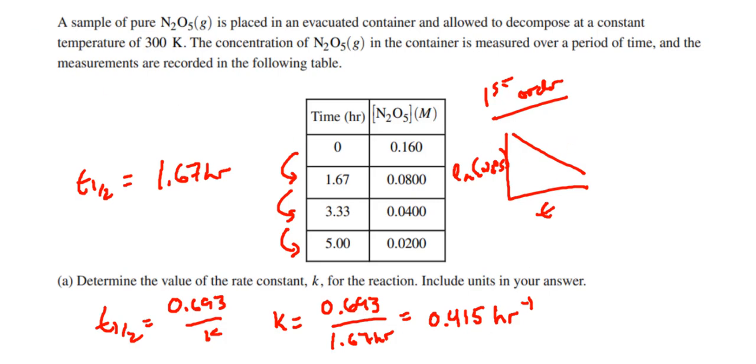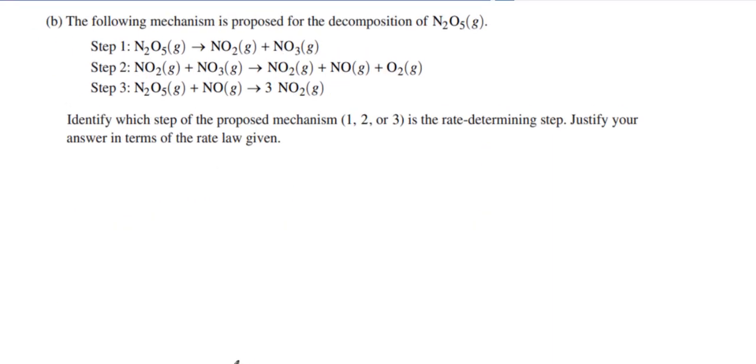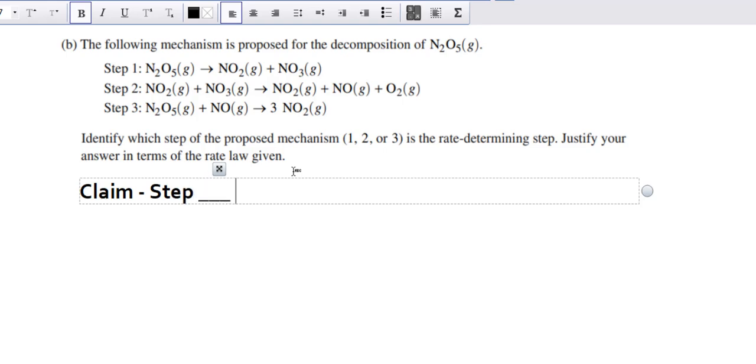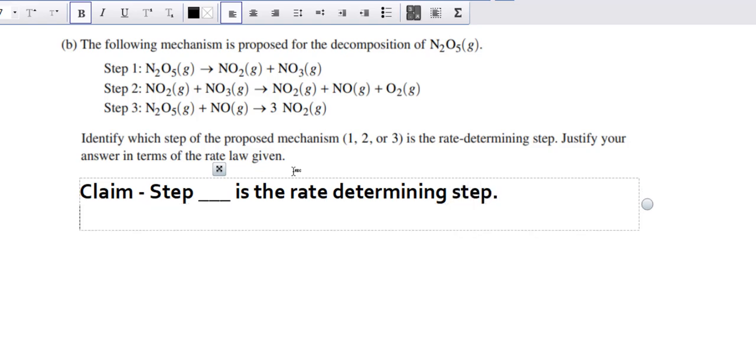That would be what the slope of the line would equal. Now let's go to the second part of the problem. It says we have a proposed mechanism with step 1, step 2, step 3, and it asks to identify which step of the proposed mechanism is the rate-determining step. Justify your answer, which means we're going to have to do claim-evidence-reason. So what is your claim? Your claim is step something is the rate-determining step.